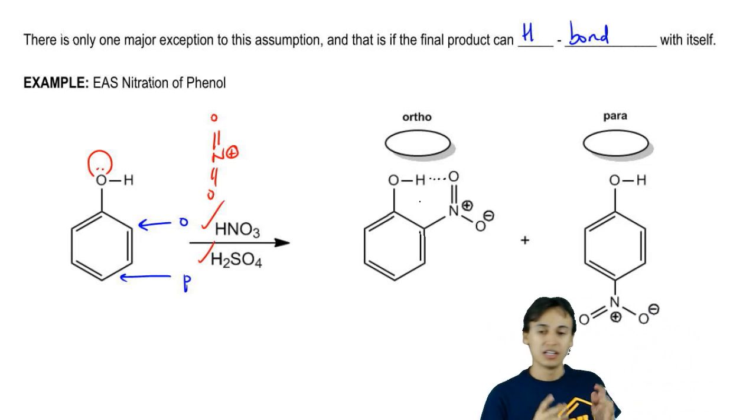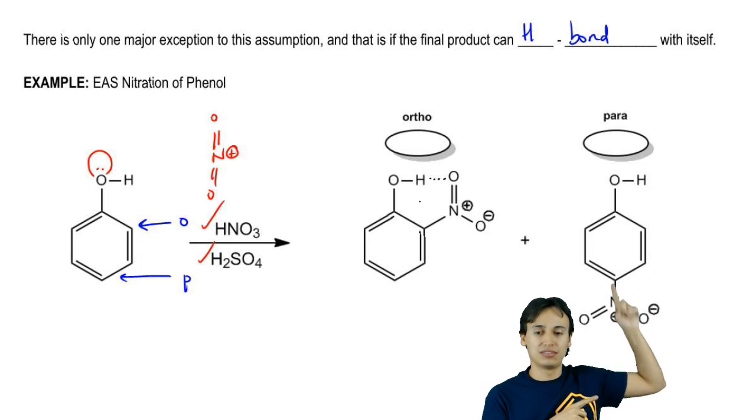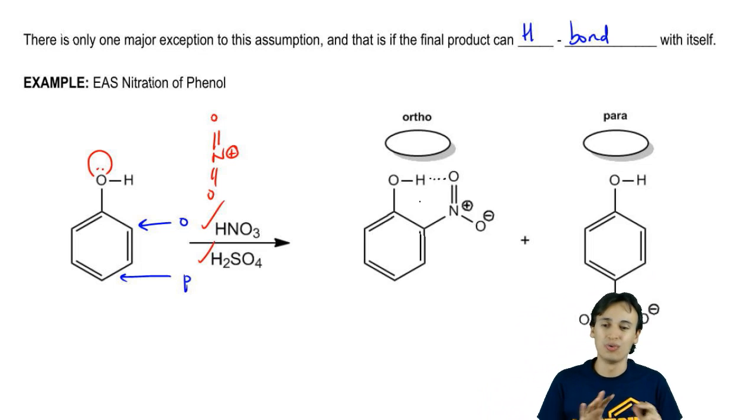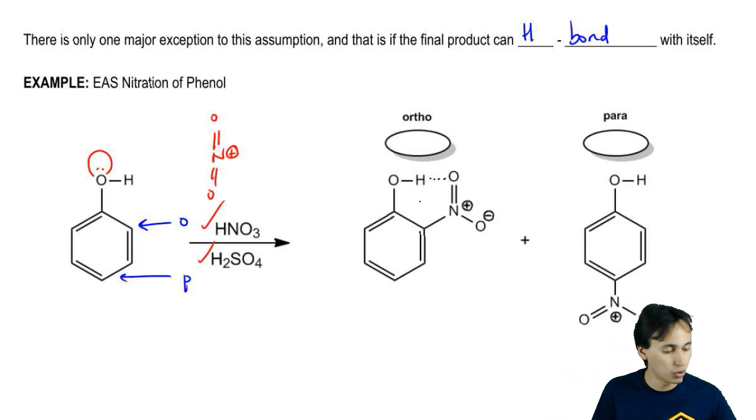Because if you make it ortho, then you can get a hydrogen bond between the phenol and the nitro group. If you make it para, it's less hindered. So it's easier to add in that way but it can't interact with itself. It's not going to be quite as favored.